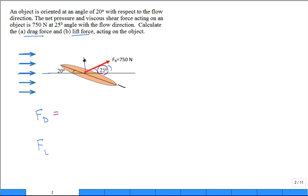Only angle you need is this 25 degrees and the magnitude of the resultant force. So the drag you decompose to be in the x direction and you have a little right triangle. It's F_R times the cosine of 25 degrees and the lift is F_R times the sine of 25 degrees. We're done with that.